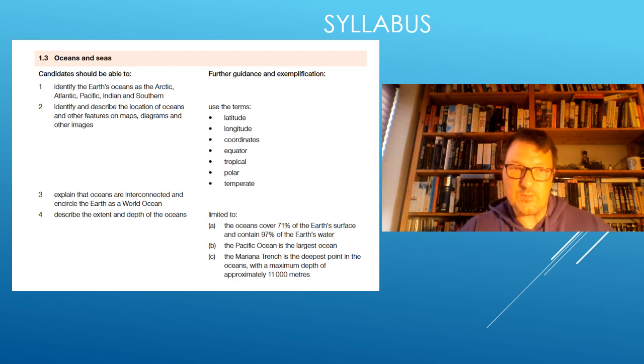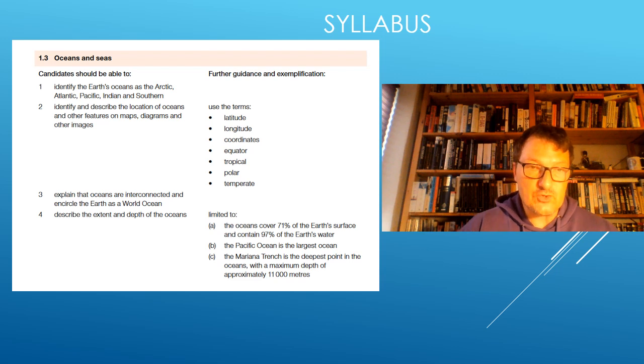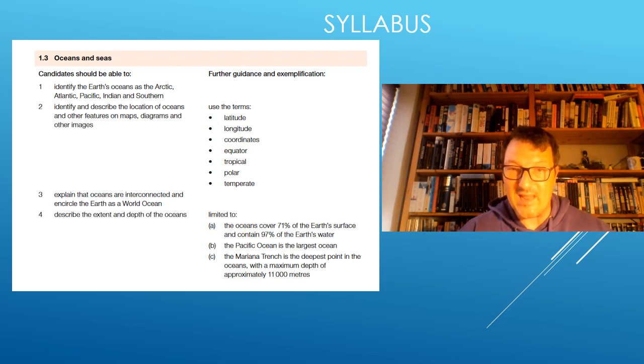So here we need to be able to identify the Earth's oceans and we need to identify and describe the localization of oceans and other features on maps, diagrams and other images. That's a classical one for the exam. We have to label the oceans. We have to explain that all the oceans are interconnected into world ocean and describe the extent of depth of these oceans.